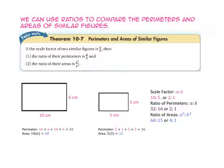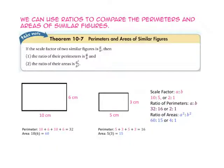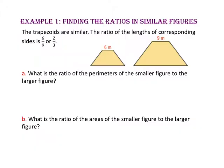Notice that the scale factor of the two rectangles is 10 to 5, or 2 to 1. The perimeter of the larger rectangle is 32 and the perimeter of the smaller rectangle is 16, or 2 to 1. The ratio of the areas — base times height 60 to base times height 15 — is 4 to 1, or 2 squared to 1 squared.